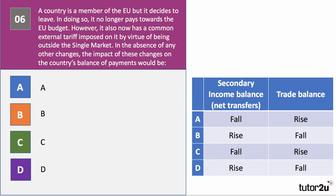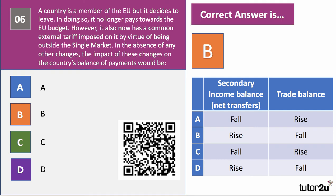Question six: a country is a member of the EU but decides to leave. In doing so it no longer pays towards the EU budget; however, a common external tariff is now imposed on it by virtue of being outside the single market. The impact on the balance of payments: the secondary income balance will improve because the country was a net contributor, paying somewhere between £8–12 billion a year net to the EU budget. The trade balance, however, will fall and deteriorate, as the EU would impose tariffs on the country's exports, making them more expensive in EU markets. The answer is B.